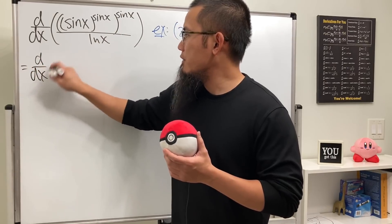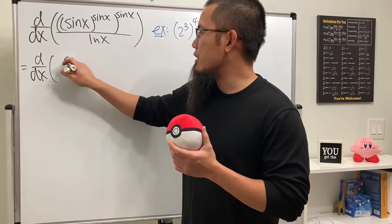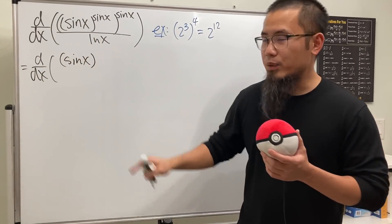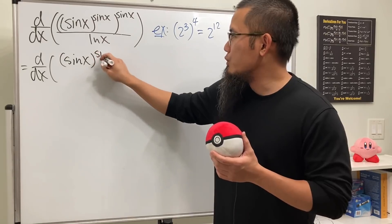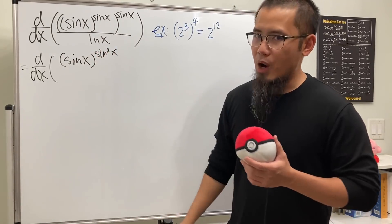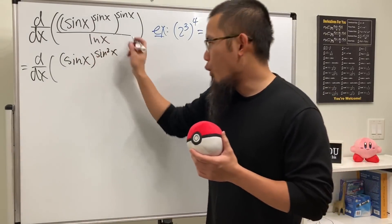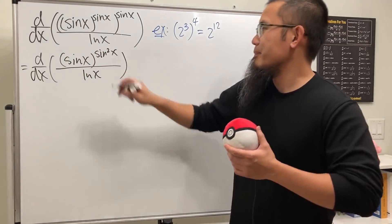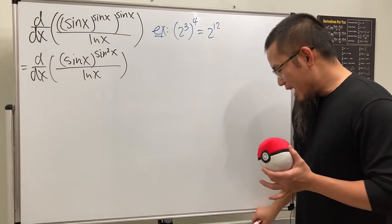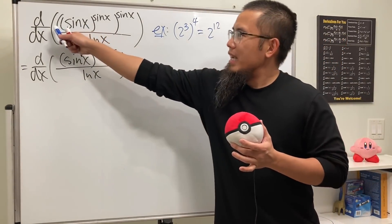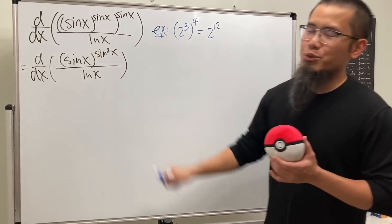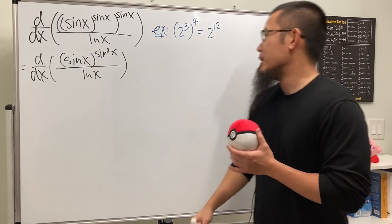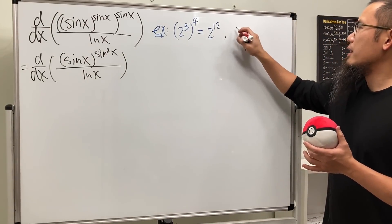So let's do the same thing here. The derivative of the top: we have sin(x) as the base, and then we multiply the powers together to get sin²(x) as the exponent, all over ln(x). Now, if we didn't have those parentheses, the question would be so much worse.